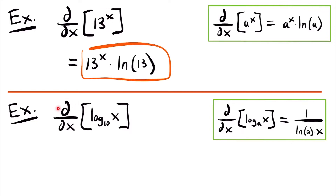Next we have the derivative of log base 10 of x. In this case we have a log function with a base of 10 that is not e. If it was e, then we'd have the natural log function. But in this case we have log base 10.